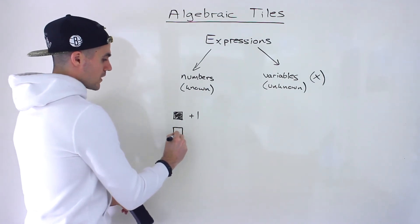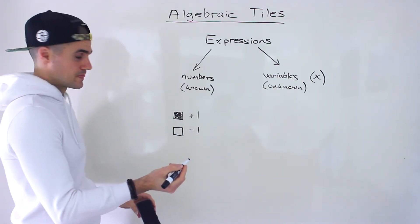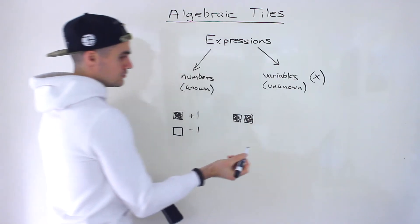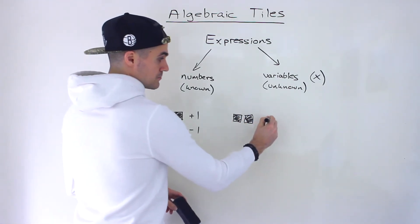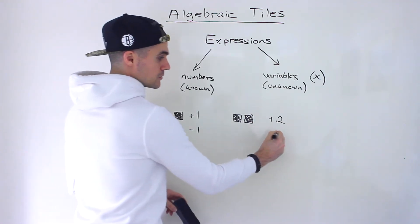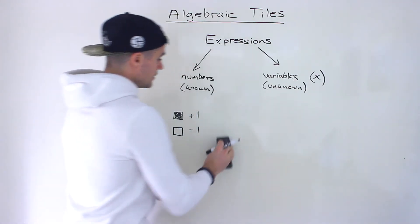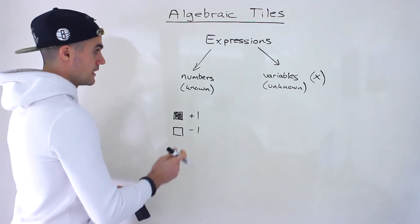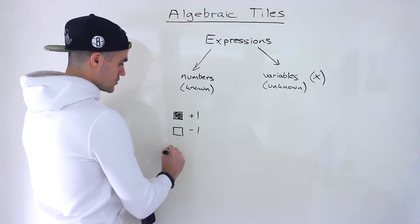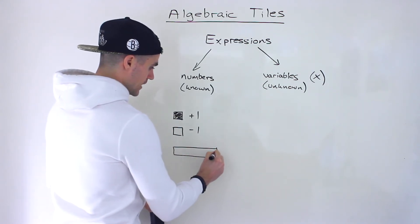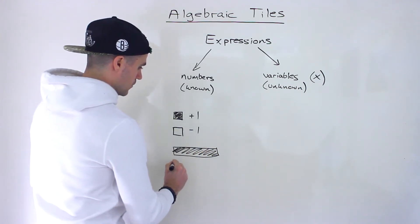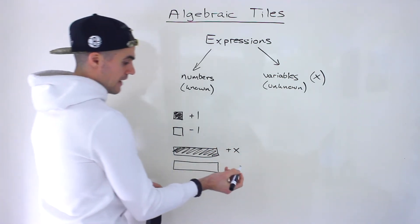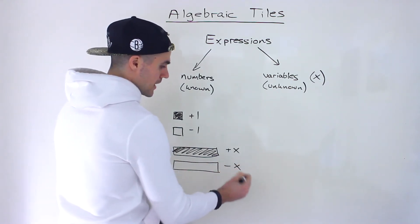A small square that is not colored in — hollow — represents minus one. So for example, if you see two colored-in squares that's plus two, but if they're hollow it would be minus two. That's how you represent numbers; if you're dealing with large numbers you would just put a bunch of these squares. The next shape is a rectangle, which can either be colored in or hollow. A colored-in rectangle represents positive x, and a hollow rectangle represents minus x.